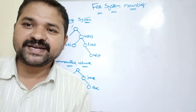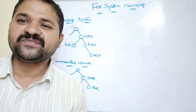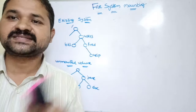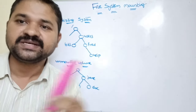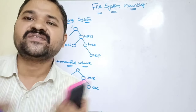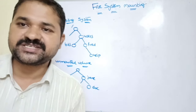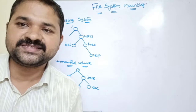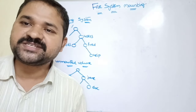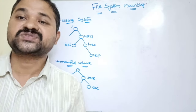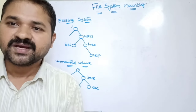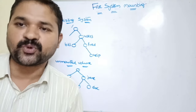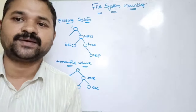Generally, in a computer we can have several types of partitions like C, D, and E. So we can have several types of file systems like C file system, D file system, and E file system. Generally the C file system contains software, while D and E contain our user programs and user-related data.